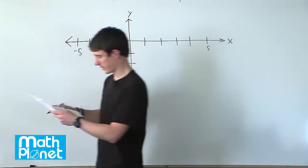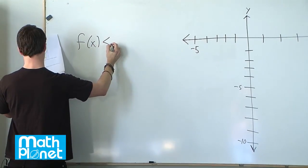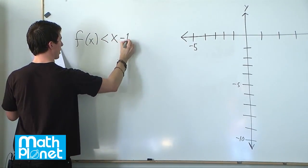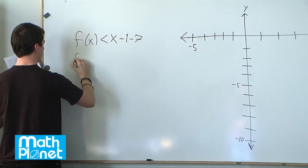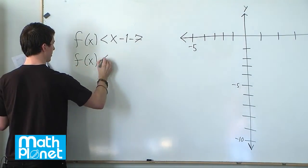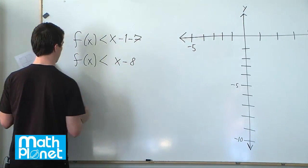So we have these two functions. We have f(x) is less than x minus 1 minus 7. So this can immediately be simplified to f(x) is less than x minus 8. So there's one.